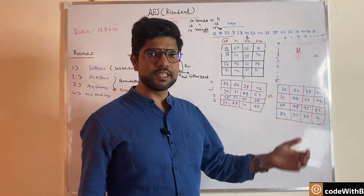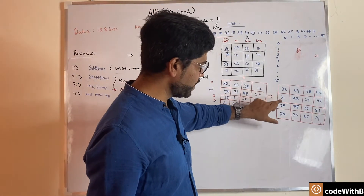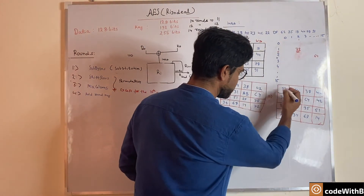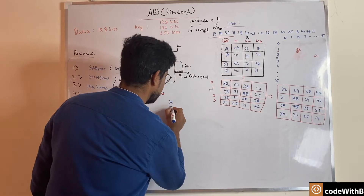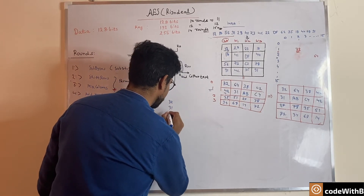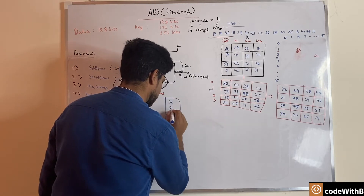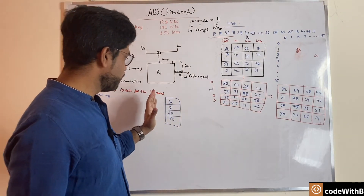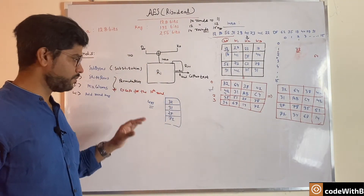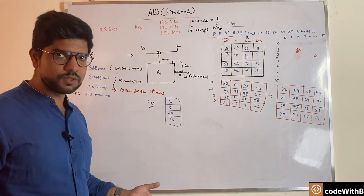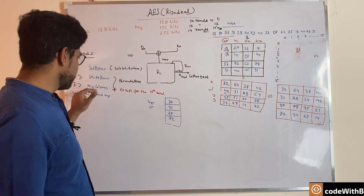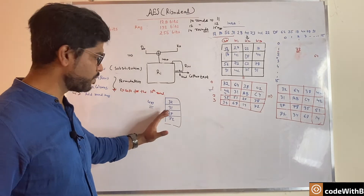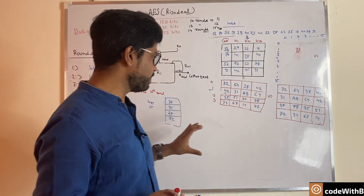Mix column will jumble up the data within each column, converting the column into some other values. For example the first column has values 32, 31, 2F, and 72. For mix column we need to mix this 4×1 column matrix with some other values. Matrix multiplication comes into picture here: we have a 4×1 matrix and we need to multiply it by a fixed matrix to get our output 4×1 matrix, so the whole column is replaced by different values.